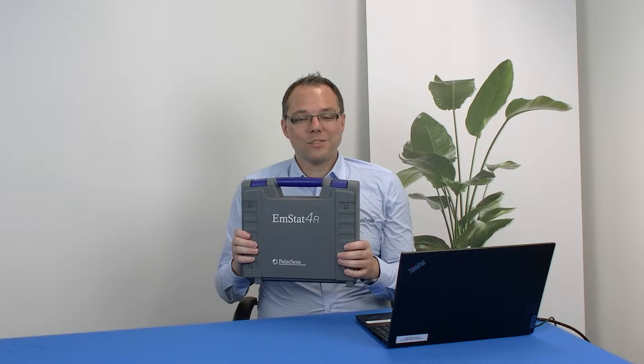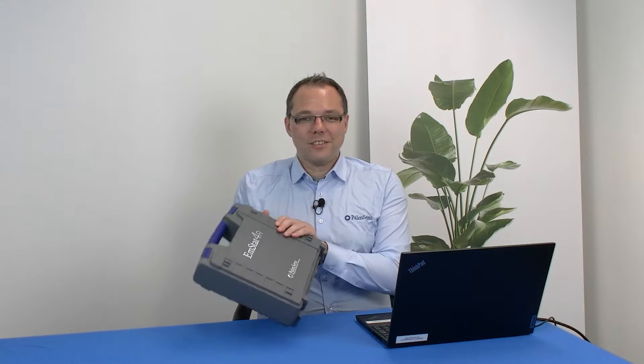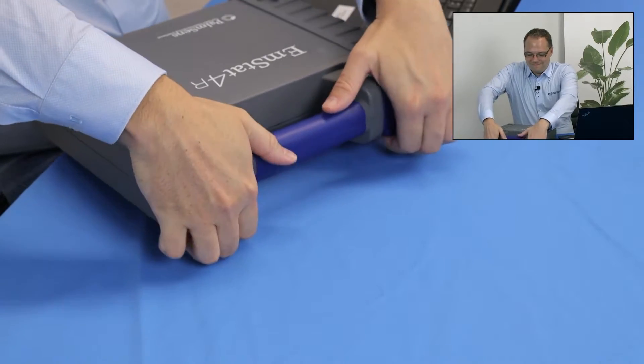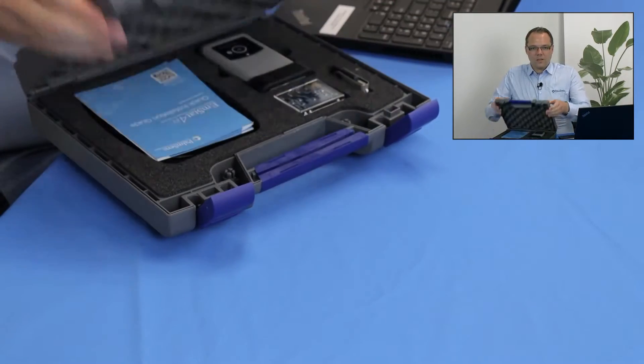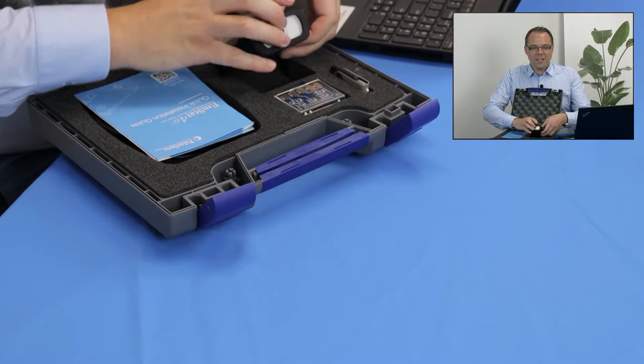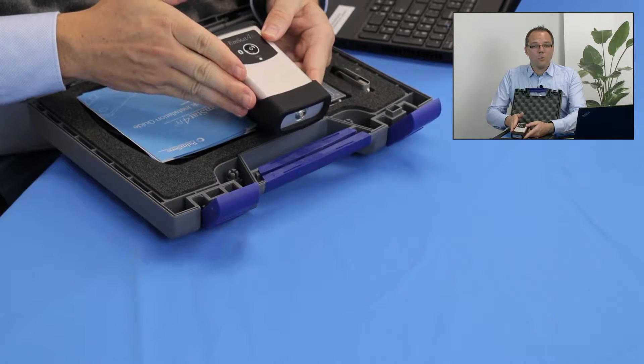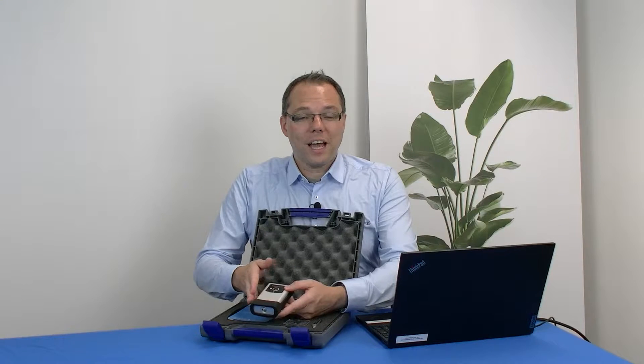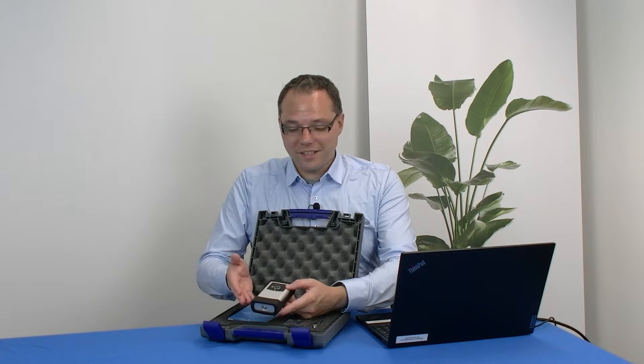As most of our instruments, this one comes in a case. So let's have a look what's inside. You will find in there the Emstat 4R, which is an Emstat 4 with battery and Bluetooth for wireless operation.